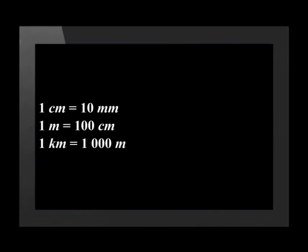In South Africa, we use the metric system of measurement. Let's look at some of the main relationships between the different units of length. One centimeter equals 10 millimeters. One meter equals 100 centimeters. One kilometer equals 1,000 meters. It is important to remember these conversions and to be able to use them in calculations.